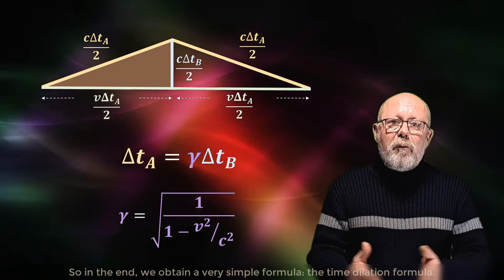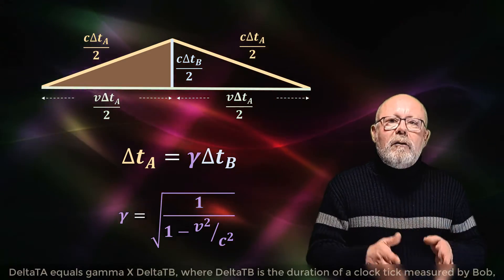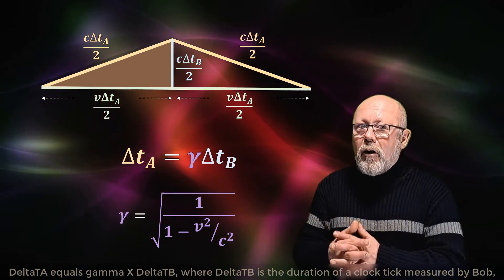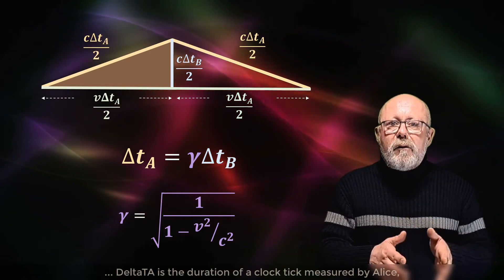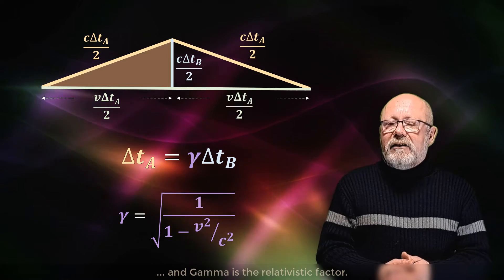So in the end, we obtain a very simple formula, the time dilation formula. Delta t_A equals gamma delta t_B, where delta t_B is the duration of a clock tick measured by Bob, delta t_A is the duration of a clock tick measured by Alice, and gamma is the relativistic factor.